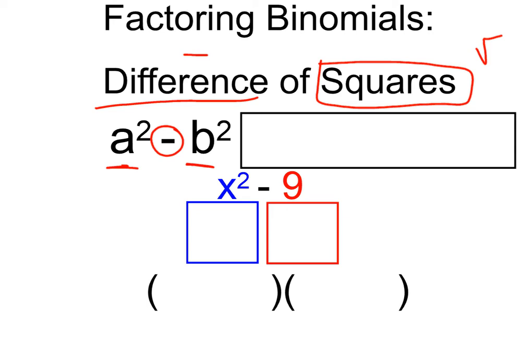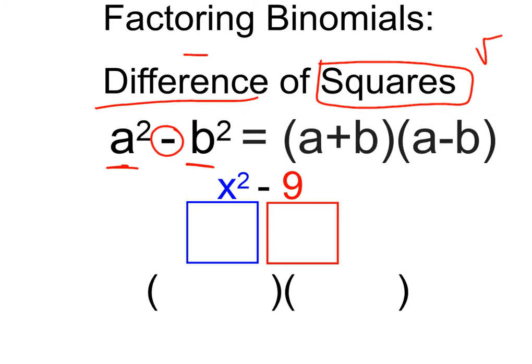When it's factored, it comes out as the first square root plus the second square root, and the first square root minus the second square root.